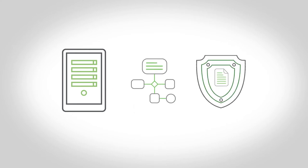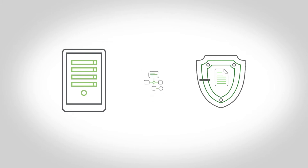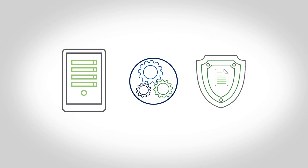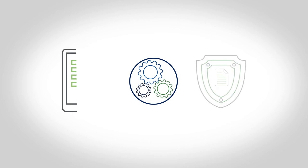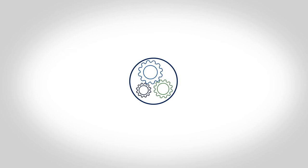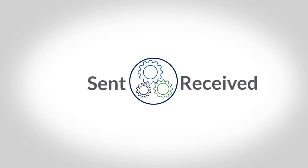This scans the files and applies redaction and sanitization policies to files where sensitive information or malware is detected. It then sends the safe version of the files back to Go Anywhere, which in turn carries out the next step of the process. This can be carried out whether the files are being sent or received.